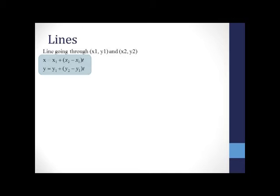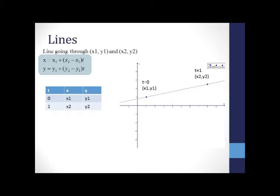Finally, I want to finish with an example from the world of geometric modeling. We'll start with a parametric equation for a line going through two points, x1, y1 and x2, y2. The general equation is given here: x equals x1 plus x2 minus x1 times t, and y equals y1 plus y2 minus y1 times t. It's easy to see that if t equals 0, we're at the point x1, y1, and if t equals 1, we reach the point x2, y2.